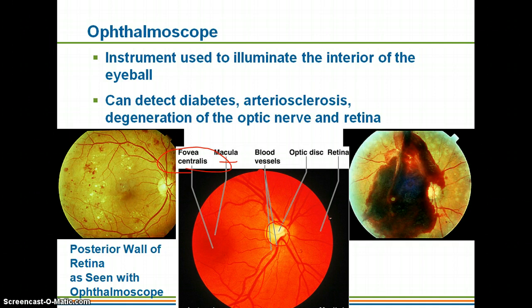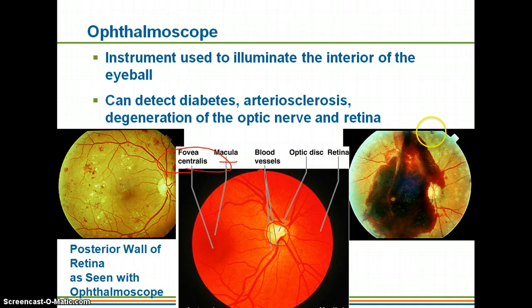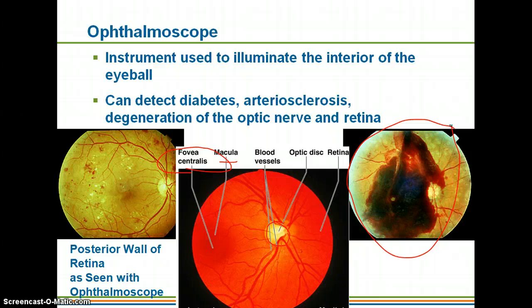Whenever they look at this, they can actually detect whether people have diabetes, arteriosclerosis, or even degeneration of the optic nerve or the retina. The image on the left is going to be a healthy retina, and the image on the right shows how they can actually diagnose whether someone has diabetes. When people get diabetes, they can actually get hemorrhaging of the blood vessels, which will cause changes in the retina.